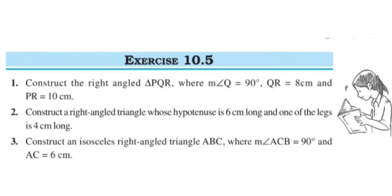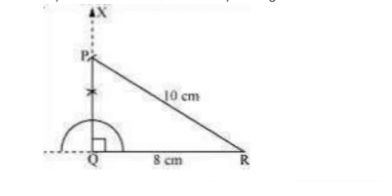Now see Exercise 10.5, Question 1: Construct the right-angled triangle PQR where angle Q equals 90 degrees, QR equals 8 centimeters, and PR equals 10 centimeters. See the steps: first draw a line QR of length 8 centimeters. At point Q, draw ray QX making 90 degrees with QR. Taking R as center, draw an arc of 10 centimeter radius to intersect ray QX at point P. Join P to R. Triangle PQR is the required right-angled triangle.